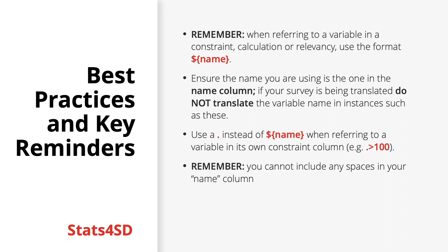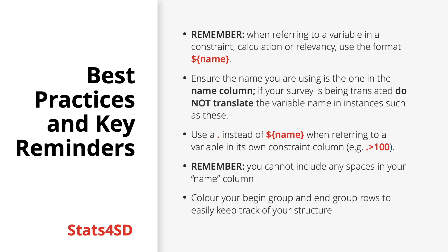Remember that you cannot include any spaces in your name column. Finally, a general tip to help you keep track of the flow and structure of your form: colour code your begin and end groups and repeats so you can easily see where each group begins and ends — especially as your form will only work if every group that has been opened has also been closed.